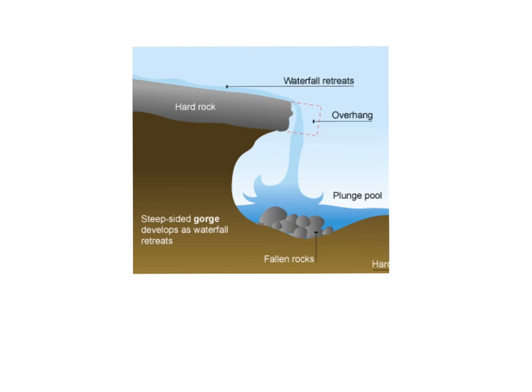Now let's zoom in on that last picture and see how the waterfall actually works. We've got the hard rock overlying the soft rock, or less resistant rock, with the water falling down into the plunge pool. The plunge pool is made deeper by erosion — erosion by abrasion, where the rocks in the plunge pool deepen and scour it out. Also by hydraulic action — the sheer force of the water falling down into there. Another type of erosion is attrition, where rocks hit into each other and become smaller and smoother over time.